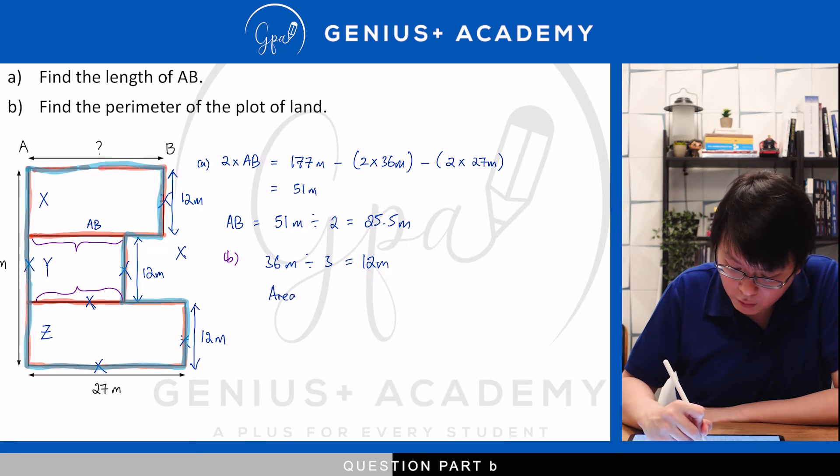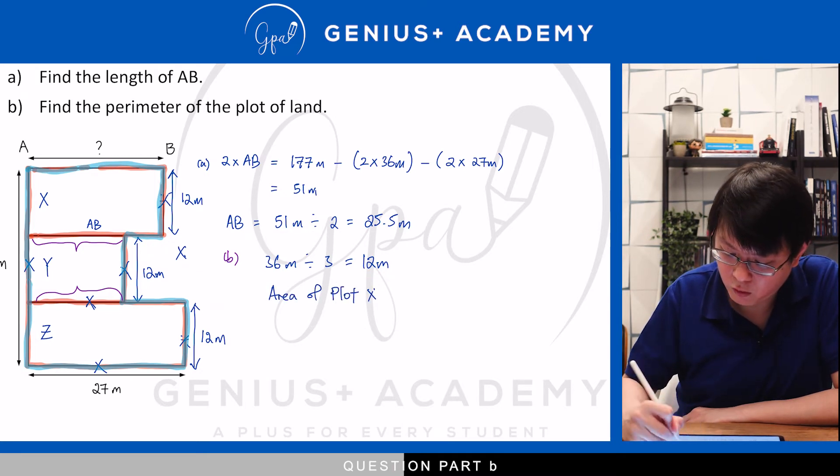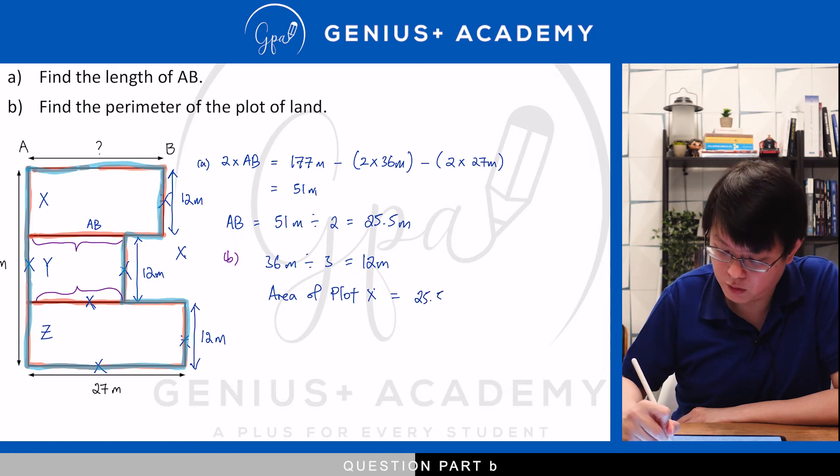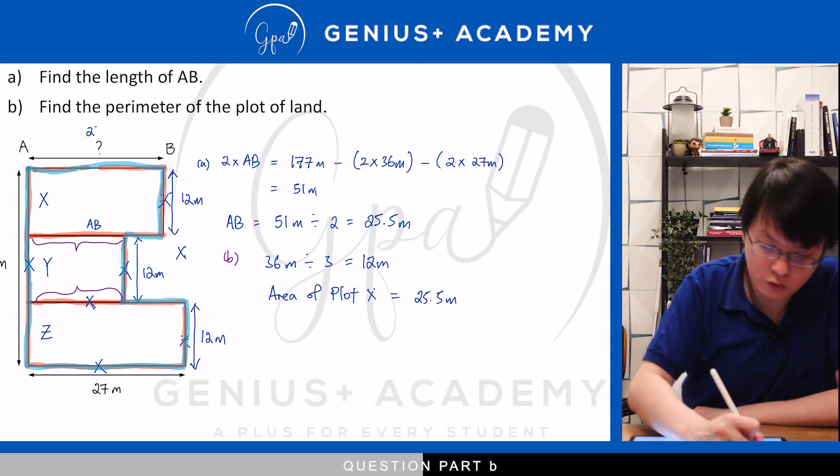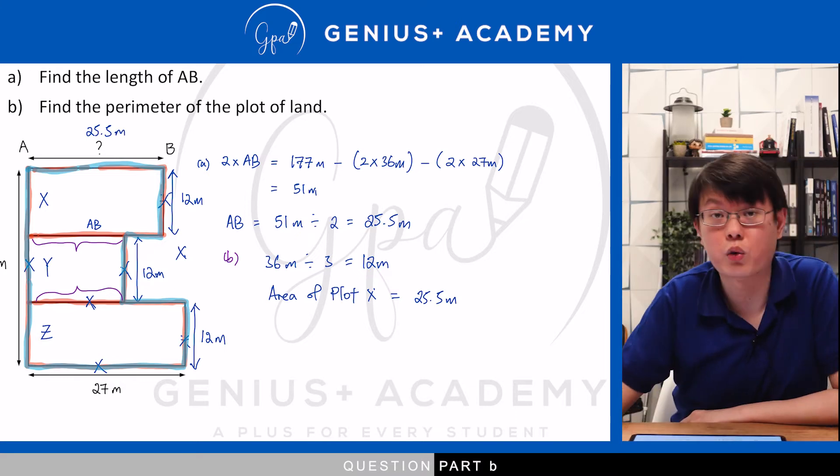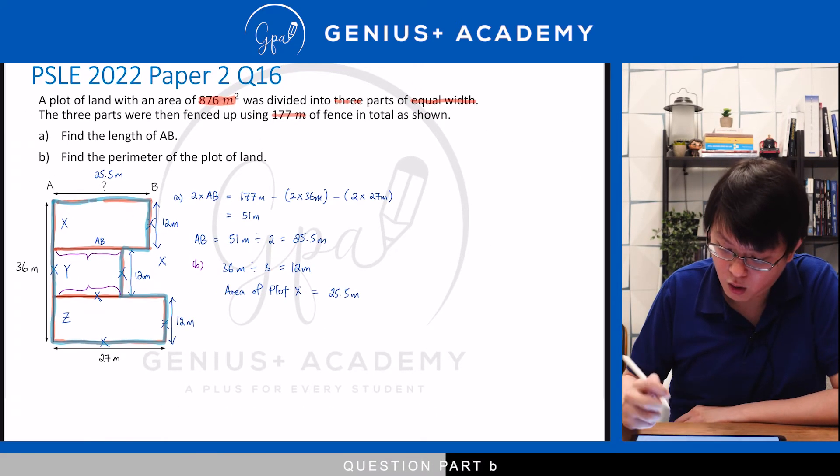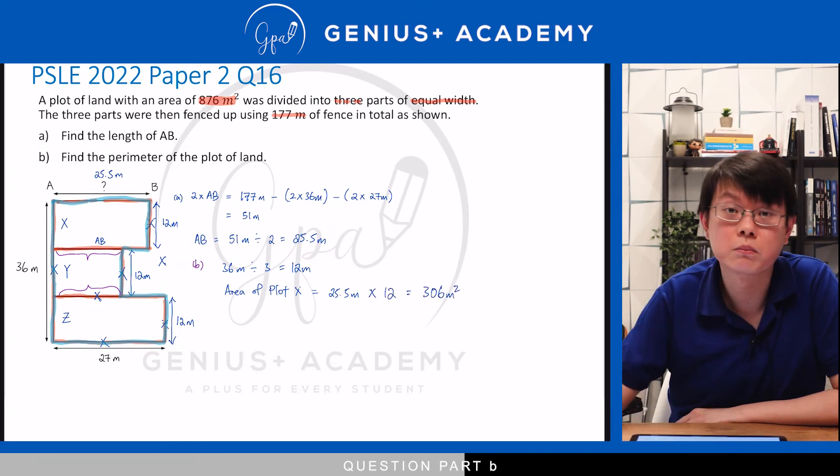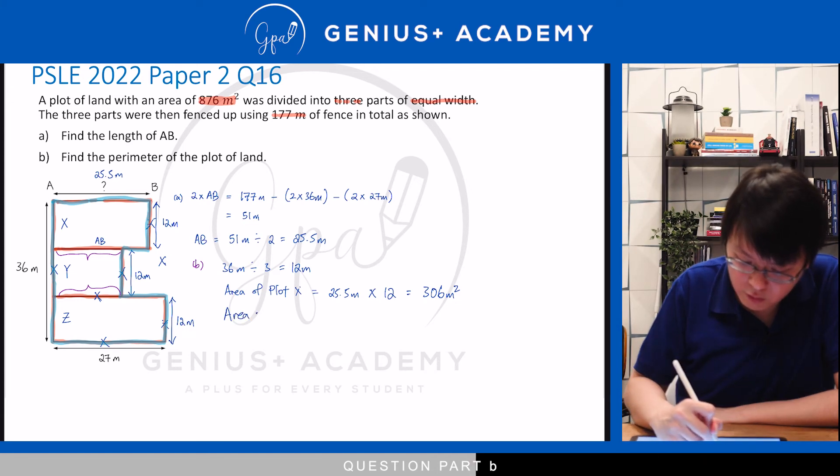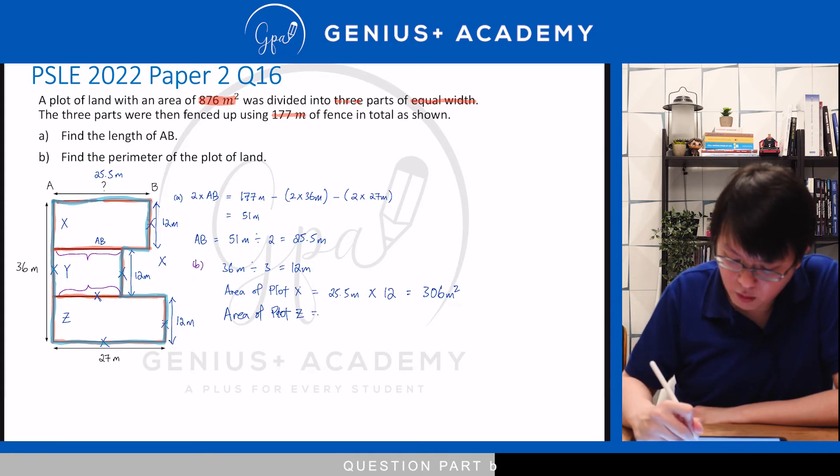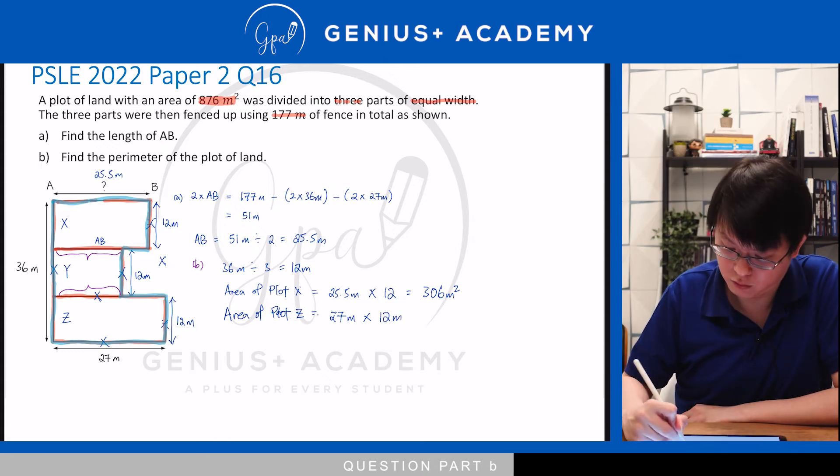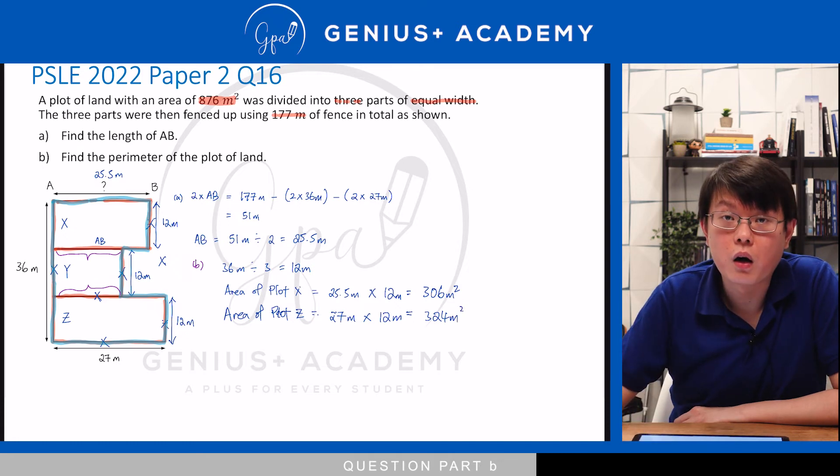Area of plot x will be equal to 25.5 metres, which we have found in part A. If you are unsure, please do remember to label it into the diagram so that you can always clarify better. Multiply by 12, that gives me an area of 306 metres squared. And I can find the area of plot z, which will be 27 metres, as given, multiplied by 12 metres. To give me 324 metres squared.